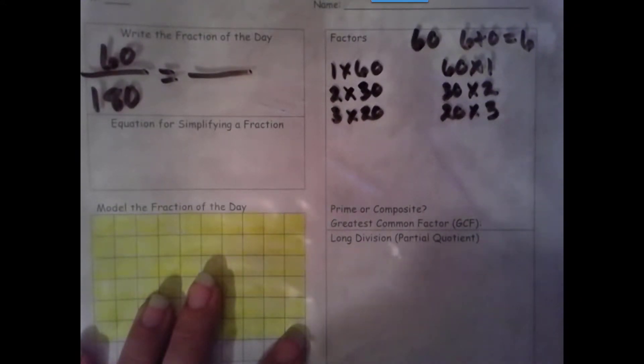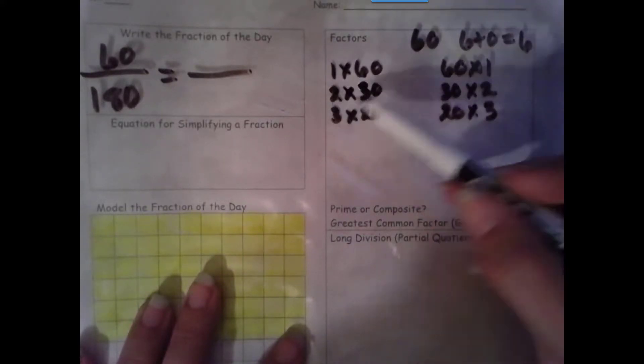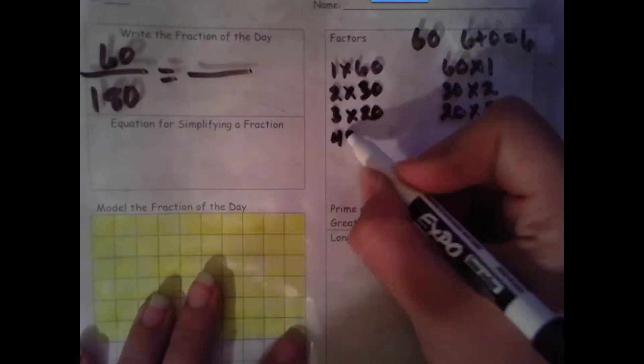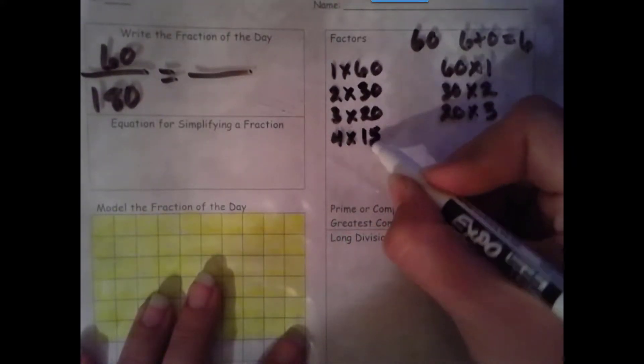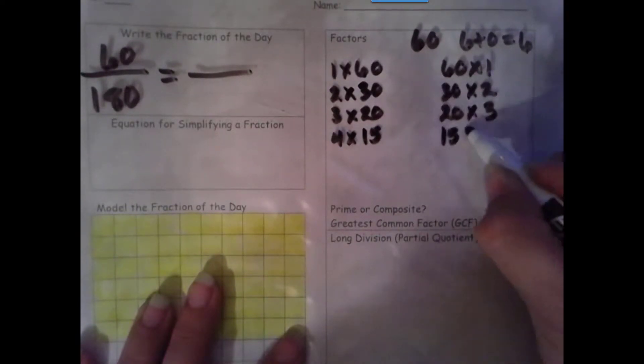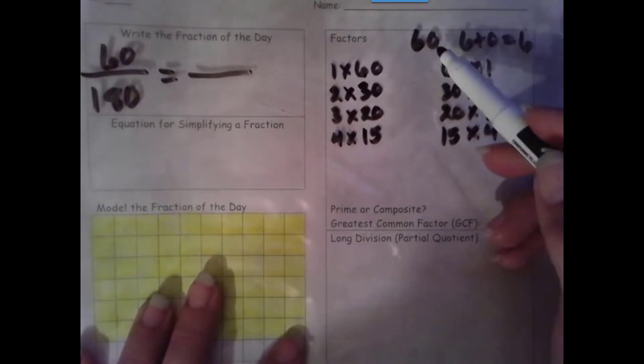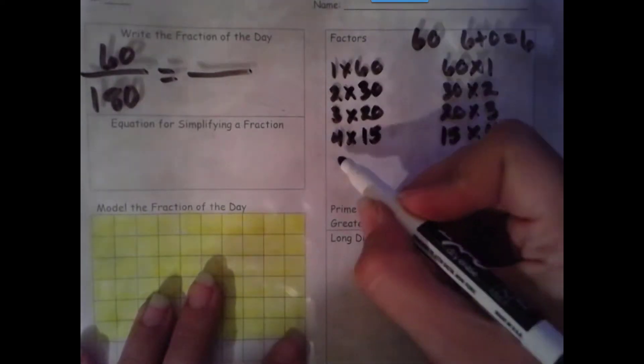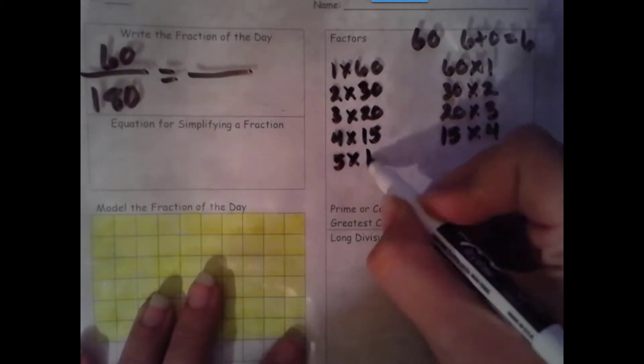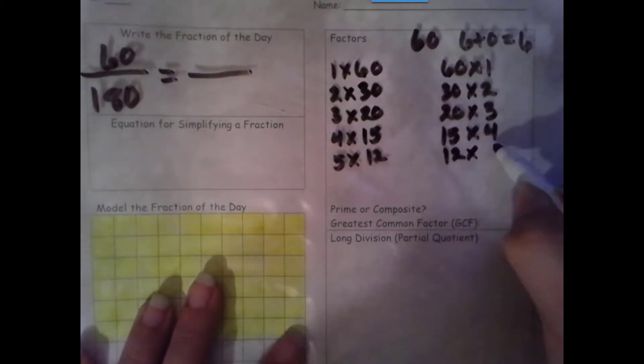We try 4. One thing to check for is to look at the second factor. With 2, is it even? Yes it is, so 4 is a factor. 4 times 15, 15 times 4. Next we try 5. The rule for 5 is that it ends in a 0 or 5. It does end in a 0, so 5 is a factor. 5 times 12, 12 times 5.